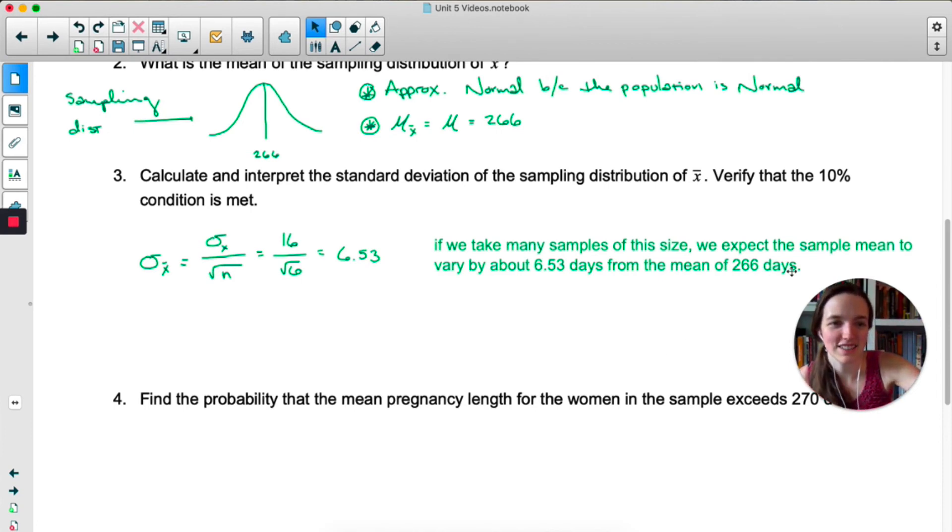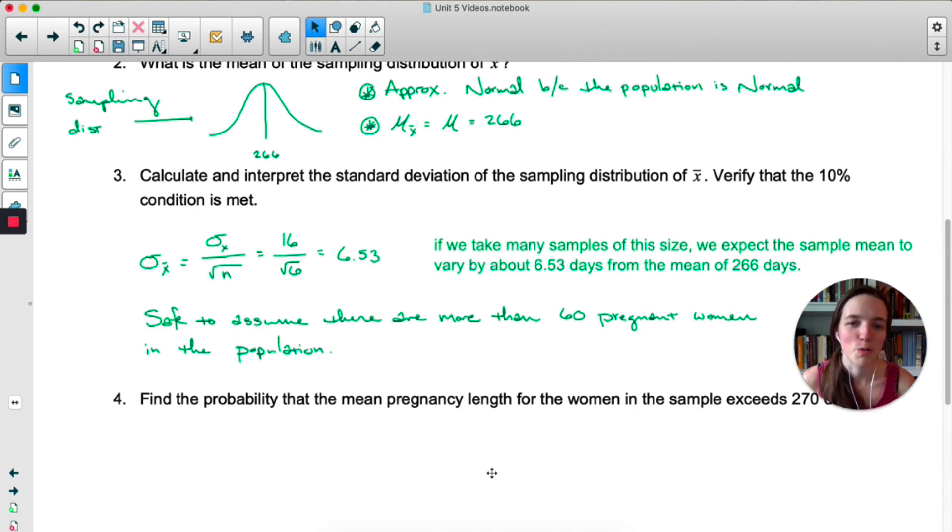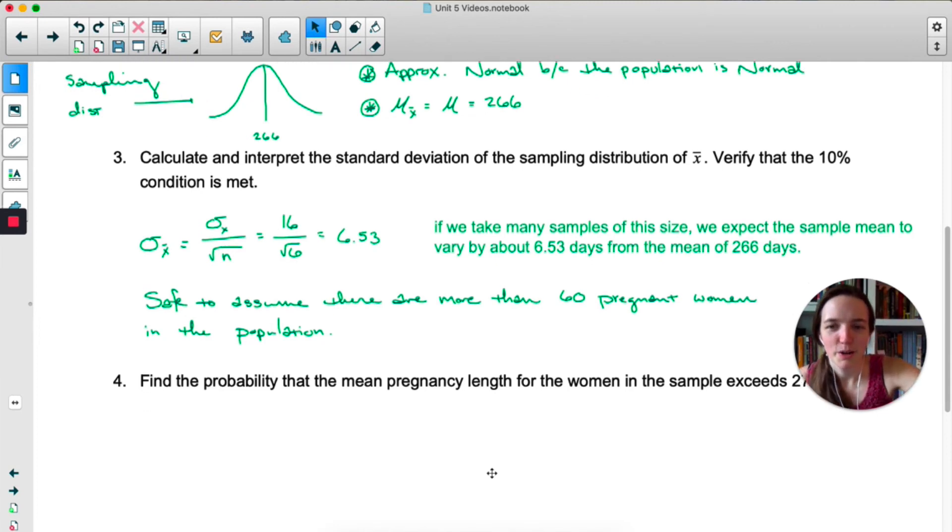I'm using the word days to remind you what we're talking about. And then we have to verify the 10% condition. We will have to assume that there are more than 60 pregnant women in the population. If we're looking at the population of the United States, I think that is reasonable.